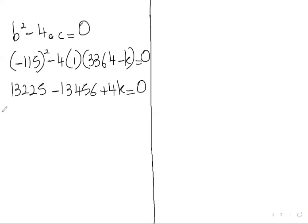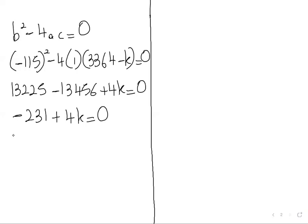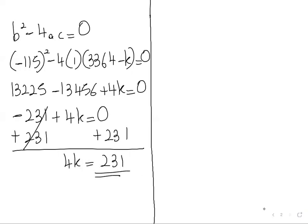So 13225 minus 13456 is minus 231 plus 4k is equal to zero. We need to find 4k, so we will add 231 on both sides. Minus 231 plus 231 cancels. 4k is equal to zero plus 231. 231 will be our answer.